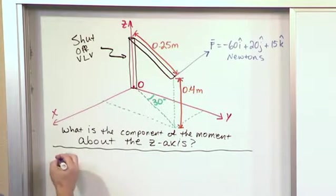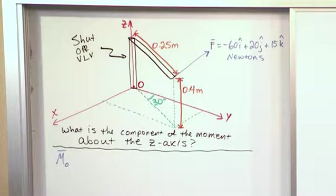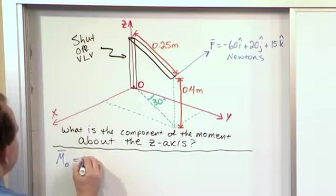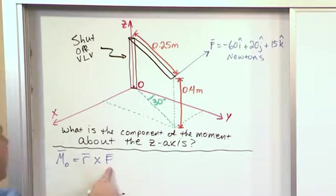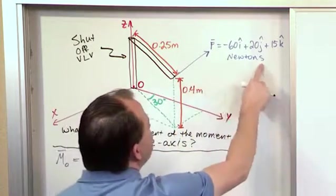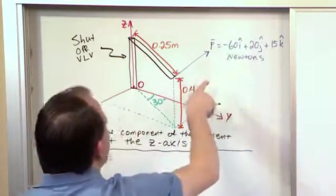So the big, big picture is we're trying to first calculate a moment developed about the point O and we already know that that's R cross F. Now the good news is we already know what F is and we don't have to do anything to it. It's already given to us in Newtons. What this means is there's 60 Newtons of force.